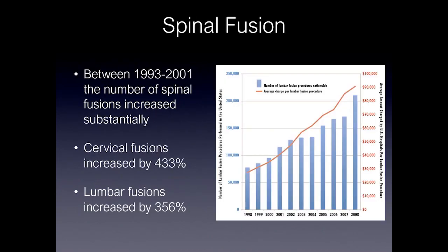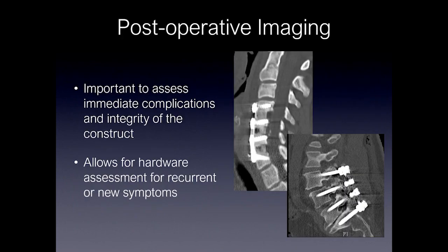Spine fusion has significantly increased over the years. Between 1993 and 2001, there was a substantially increased number of fusions performed — cervical fusions by approximately 400%, and lumbar fusions were increased during that time frame over 350%. Therefore, postoperative imaging is important in assessing immediate complications and integrity of the surgical construct, and it allows for hardware assessment for recurrent or new symptoms.